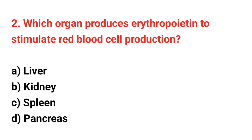Question number 2: Which organ produces erythropoietin to stimulate red blood cell production? The right answer is option B: Kidney.